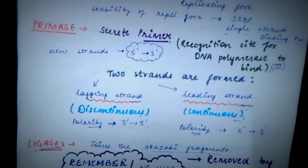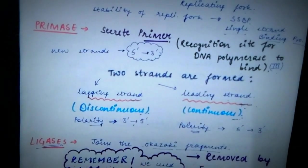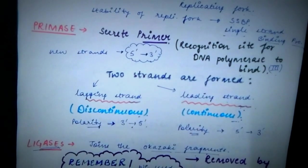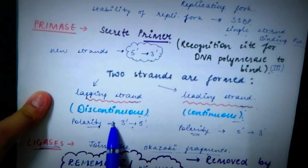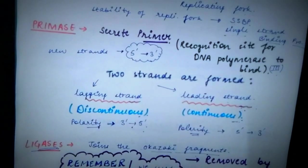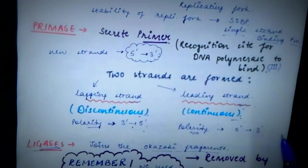The polarity of lagging strand is 3' to 5' end. The polarity means in this direction, we read the nucleotide bases. So the polarity of lagging strand is 3' to 5' end, whereas the polarity of the leading strand is 5' to 3' end.